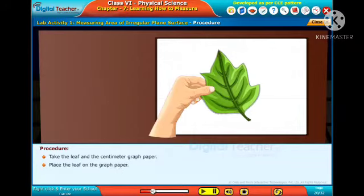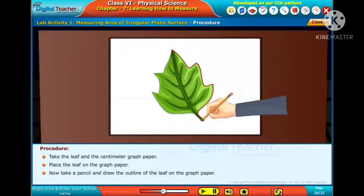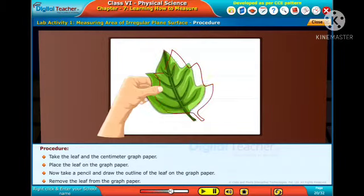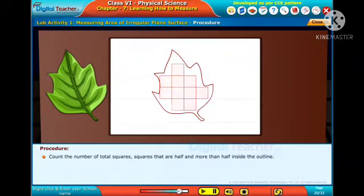Take the leaf and the centimeter graph paper. Place the leaf on the graph paper. Now take a pencil and draw the outline of the leaf on the graph paper. Remove the leaf from the graph paper. Count the number of total squares that are half and more than half inside the outline.